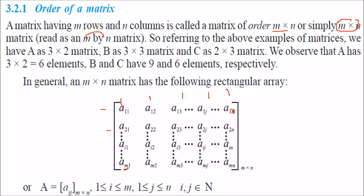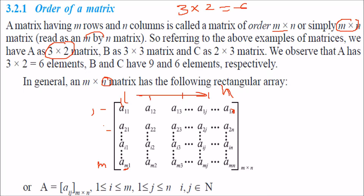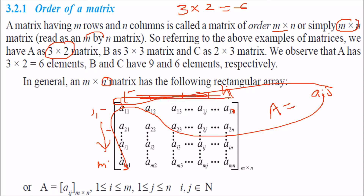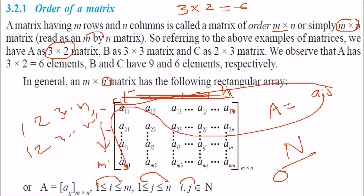One more point: if a matrix is 3 by 2, multiply the two numbers to get the total number of elements — so 6 elements. In the general m by n matrix, rows go from 1 to m and columns from 1 to n. We write A = [a_ij], where i goes from 1 to m and j from 1 to n, and i, j belong to the natural numbers.